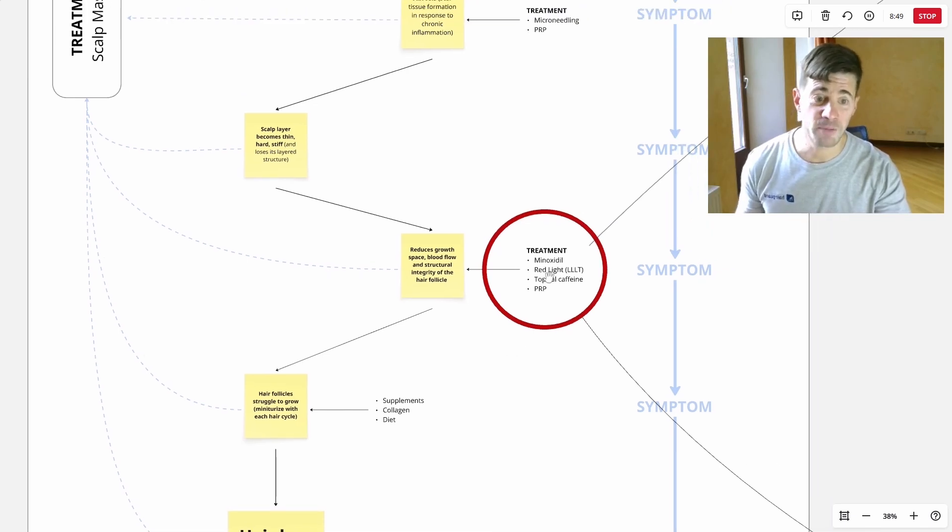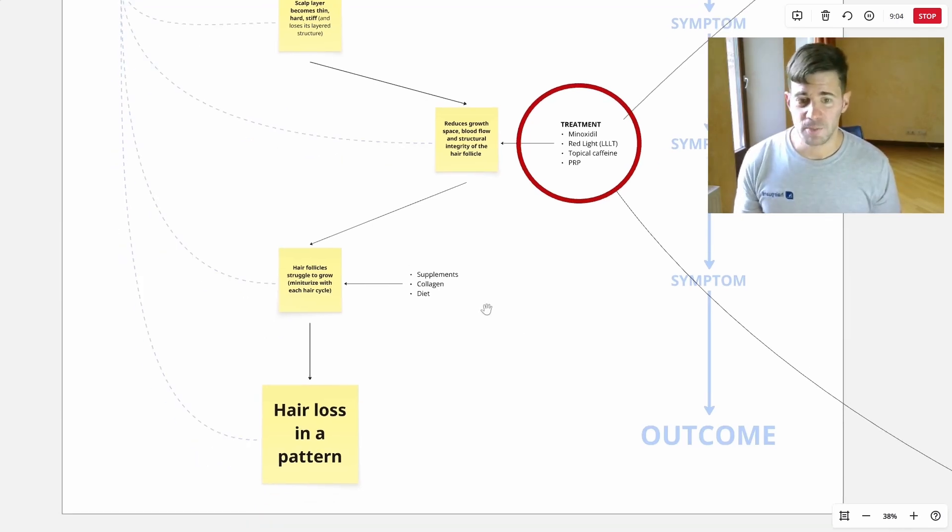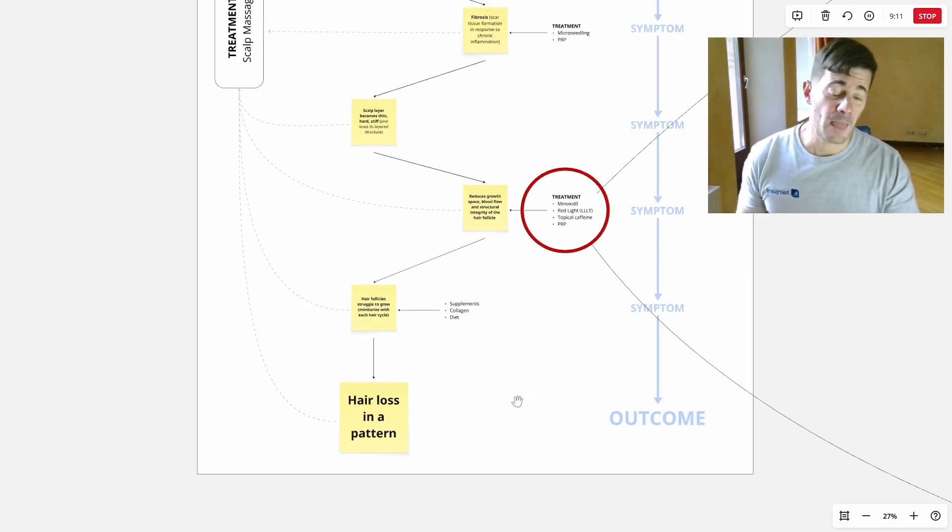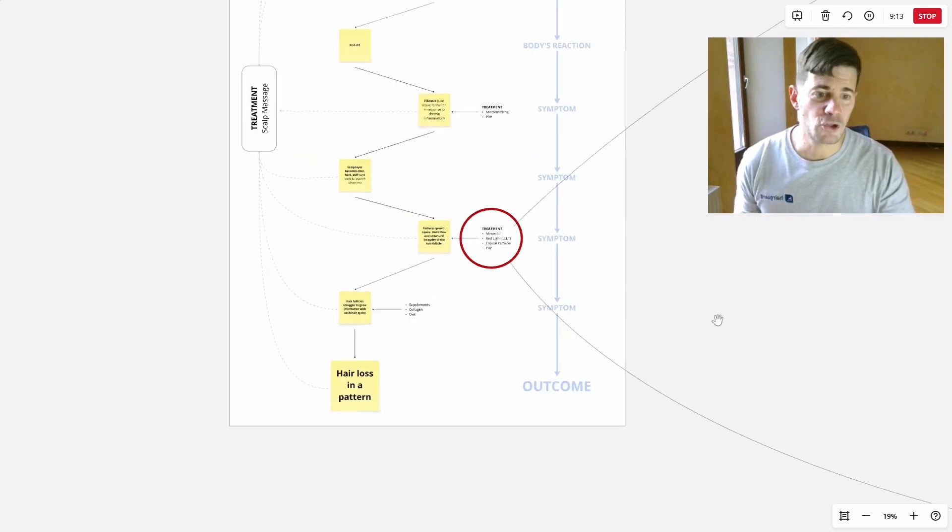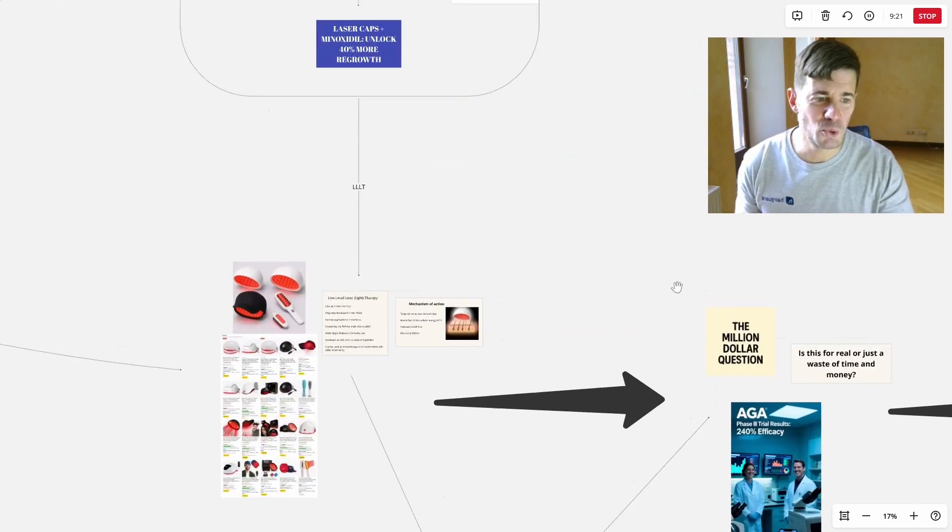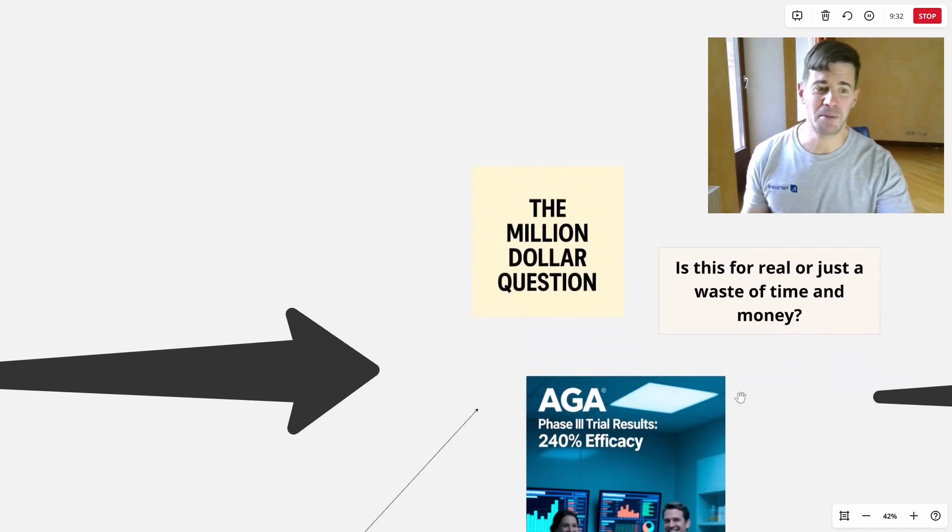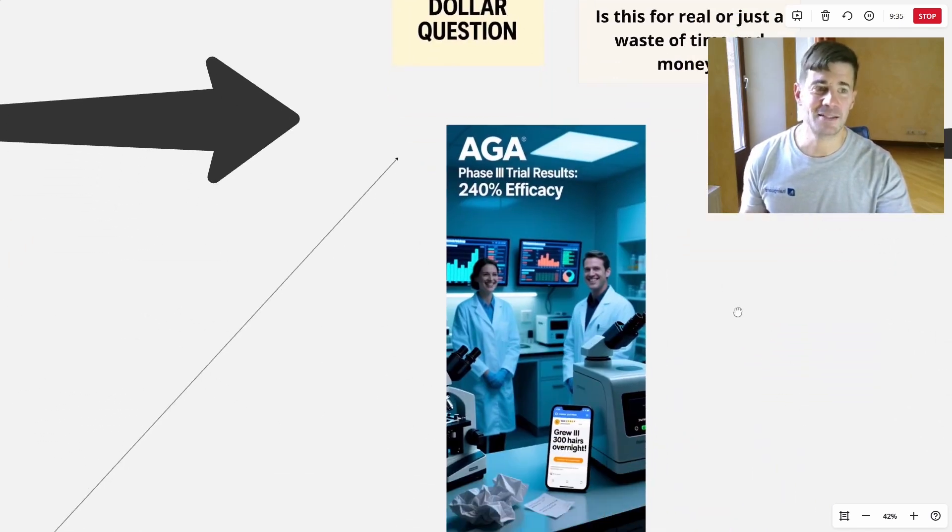That in turn reduces the growth space of the hair follicles, and it impairs blood flow, and it also compromises the structural integrity of the hair follicle. And this is where both minoxidil and LLLT come in. They both deal at this point in the hair loss cascade, relatively downstream, but they can still be quite effective. Eventually the hair follicles miniaturize, and then you have the visible pattern that gives rise to the term male pattern hair loss. So now that we've placed both of these treatments, let's go to the million-dollar question.